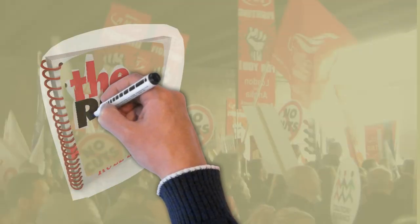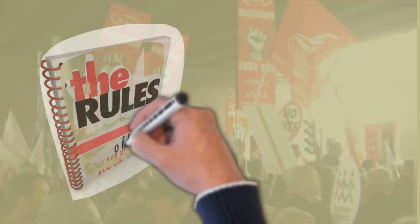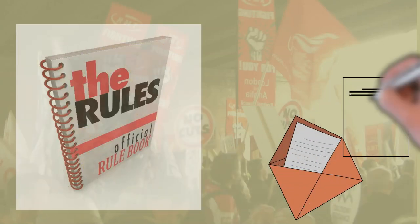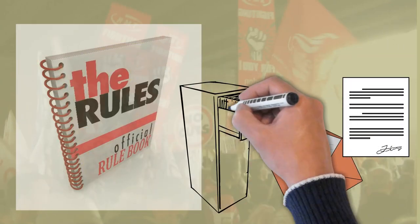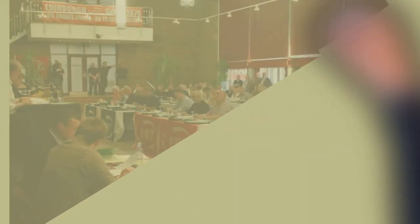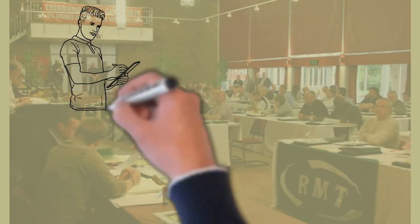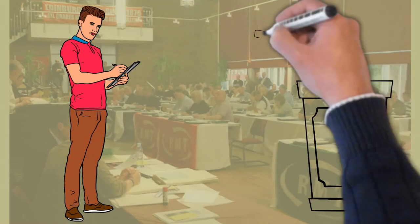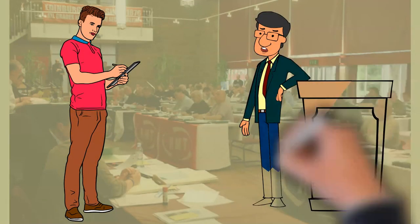The General Secretary's role is set out in the union's rulebook and includes conducting the union's correspondence, preparing reports and documents, keeping membership records, providing services, convening and keeping records of the annual general meeting and other meetings, and attending these meetings with the right to speak but not vote.